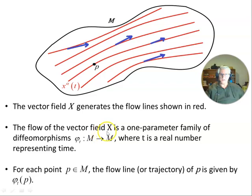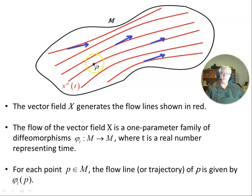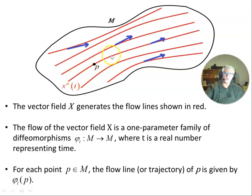The flow of the vector field X is a one-parameter family of diffeomorphisms phi_t that maps the manifold to itself, where t is a real number representing time. For each point P belonging to the manifold M, the flow line or trajectory of P is given by phi_t of P. This mapping generates all the different points along which this flow line moves — every single point along here has a particular value phi_t of P.